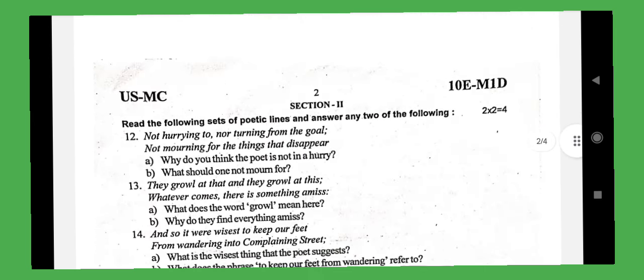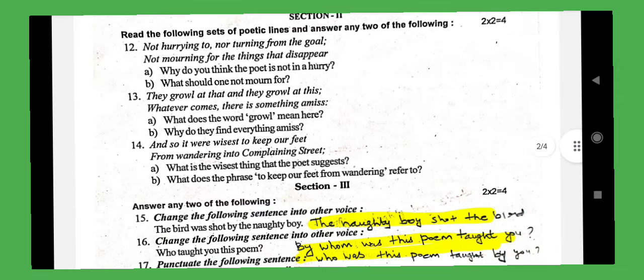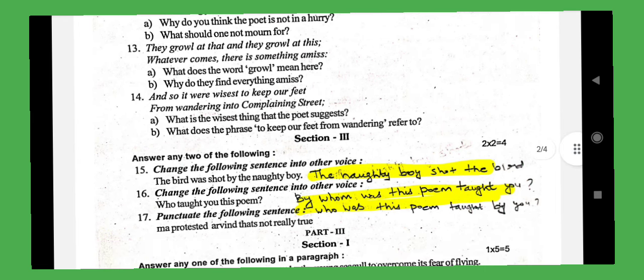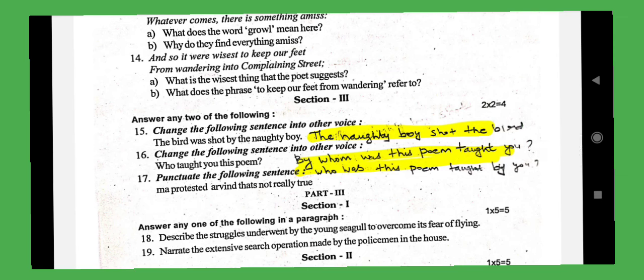The first question is very important: Why do you think the poet is not in a hurry? What should one not move? The concept is about a life point — they crawl at that. What does 'crawl' mean? It is a low guttural sound. Why do they find fault with everything? Because they are always grumbling. What is the wisest thing the poet suggests? Stay away from the grumbler family.